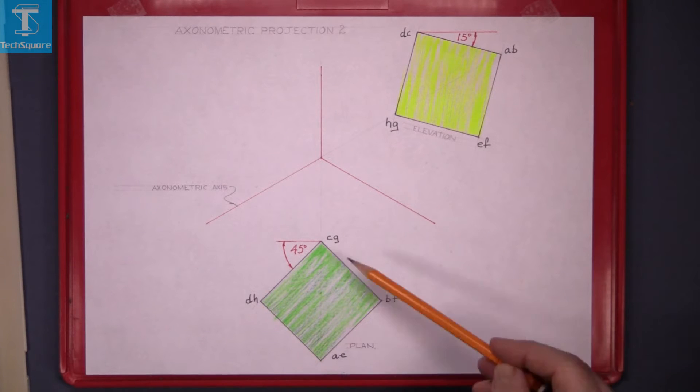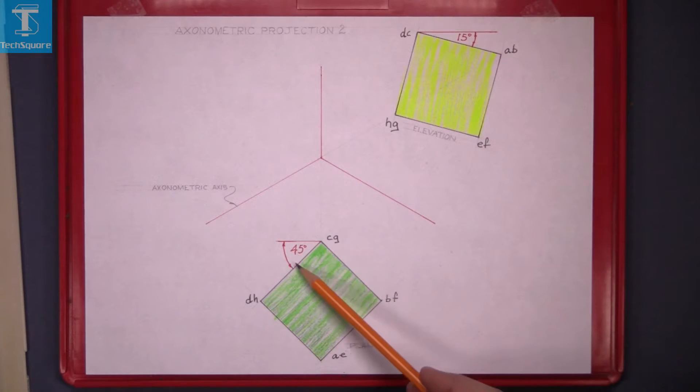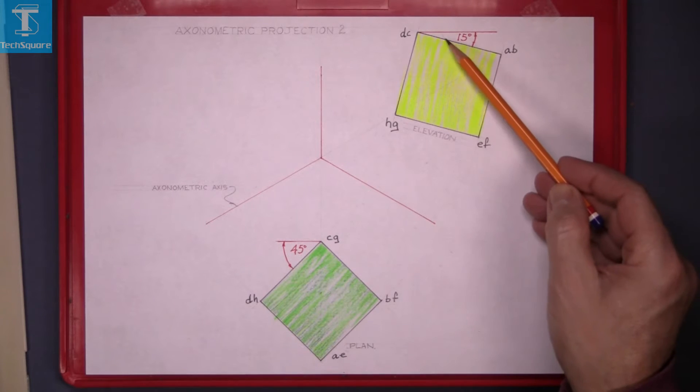the plan is drawn at an angle of 45 degrees, the elevation is drawn at 15 degrees.